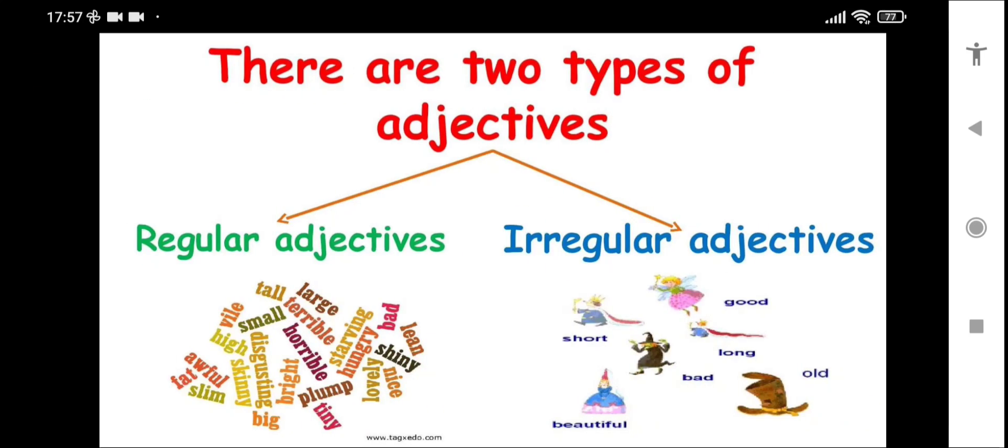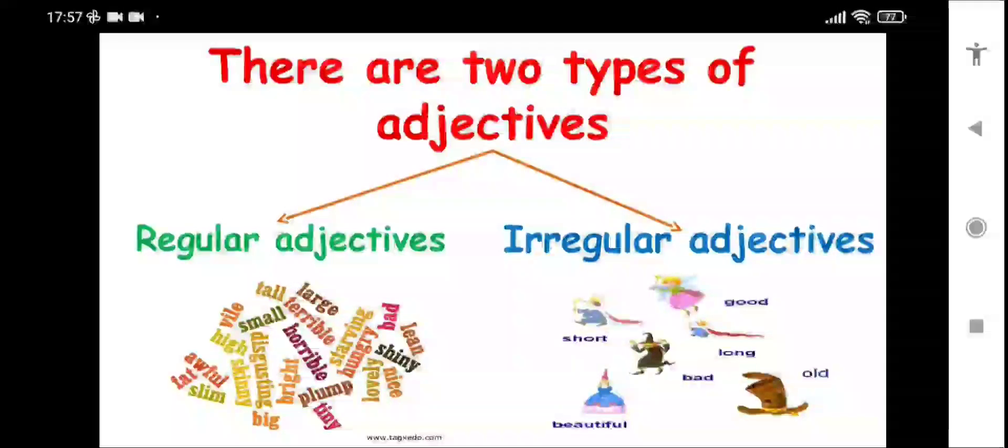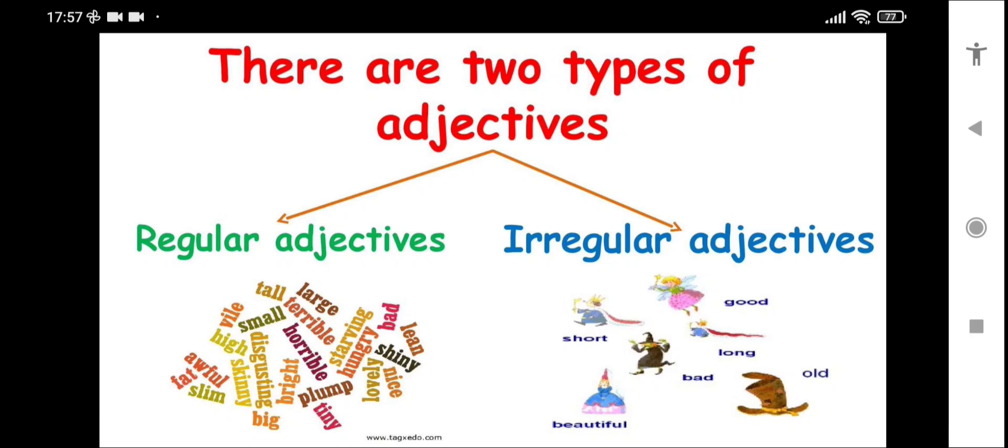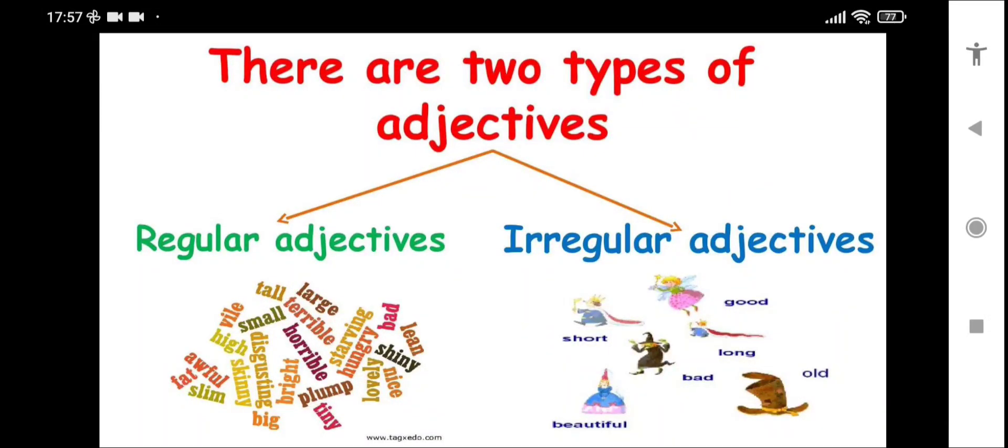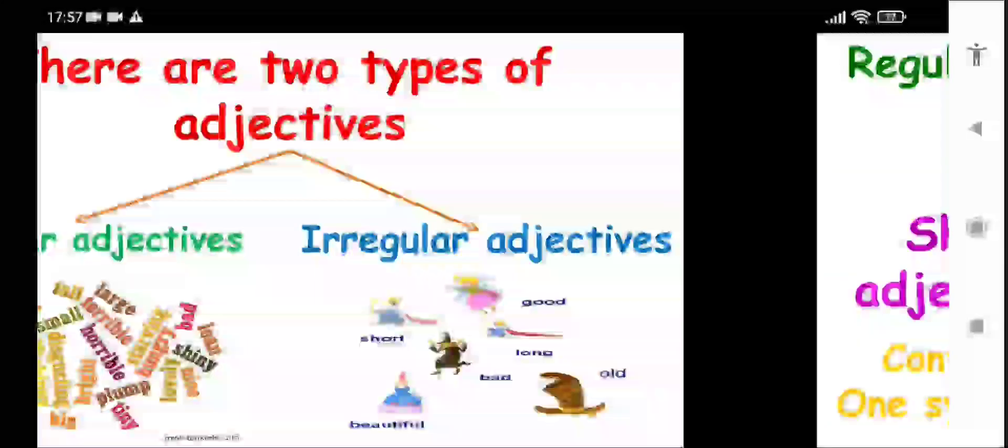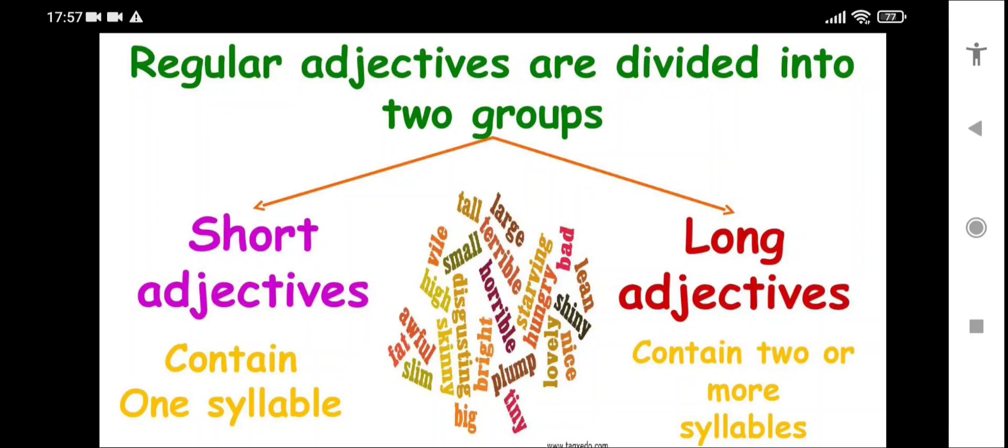There are two types of adjectives: regular adjectives and irregular adjectives. Regular adjectives, for example: large, tall, terrible, bad, lean, shiny, nice. And irregular adjectives like: short, good, bad, old, beautiful. These are the two types of adjectives. Regular adjectives are divided into two groups.